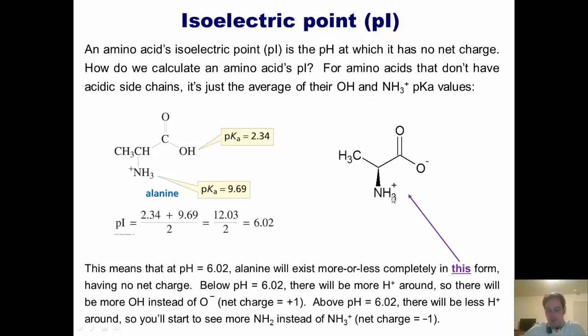So what is alanine's net charge at low pH? It's plus 1. At higher pH, we start to see less and less H+ around, and eventually we deprotonate this NH3+ and turn it into an NH2. So if you have a neutral NH2 here, what is alanine's net charge? It's minus 1.